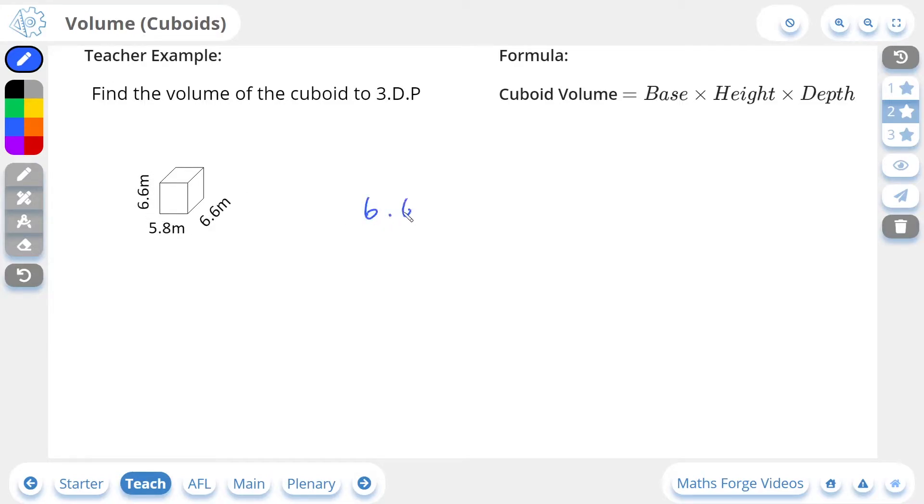So it's going to be 6.6 multiplied by 5.8 multiplied by 6.6. And calculating this gives us a value of 252.648 meters cubed. And if we check our answer, there it is, to 3 decimal places.